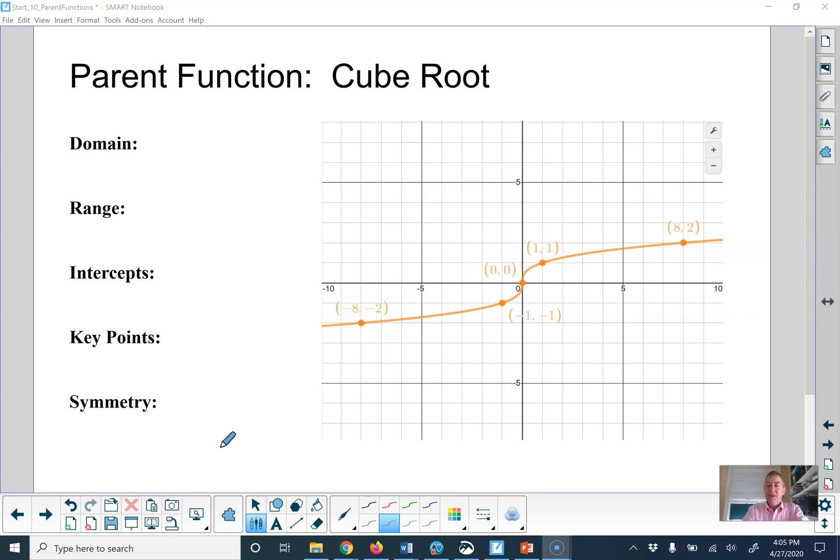Slightly different because this branch continues on down into the negatives. You can have a negative number when you cube something, and therefore when you take a cube root. For instance, negative 2 times negative 2 times negative 2 is negative 8. So negative 8, negative 2 is a point on the cube root, and that wasn't possible with square roots. So, a little bit of change.